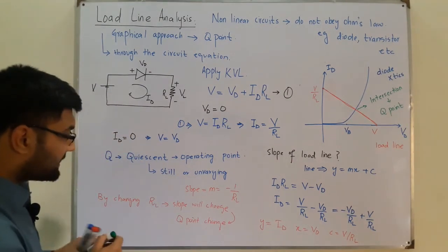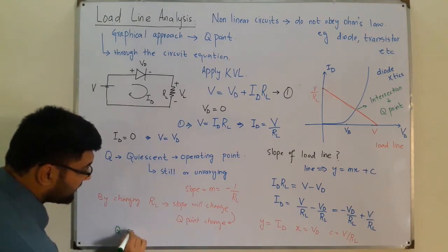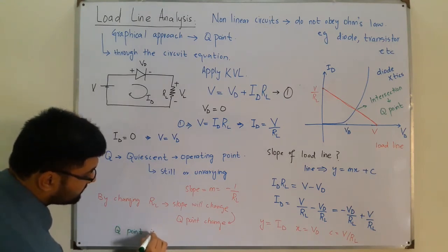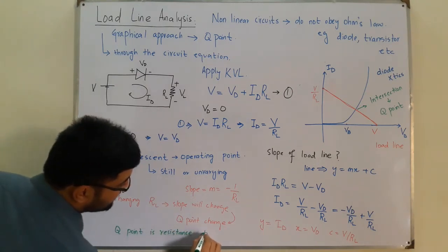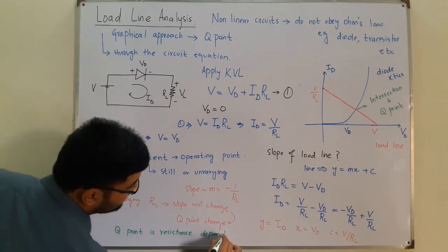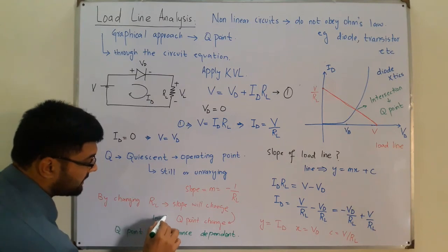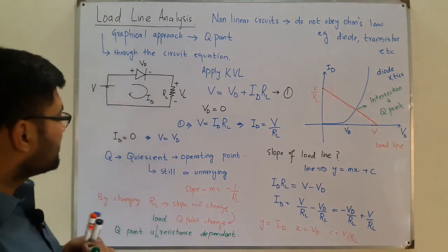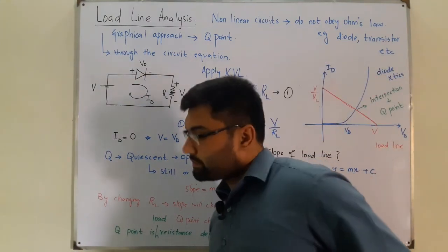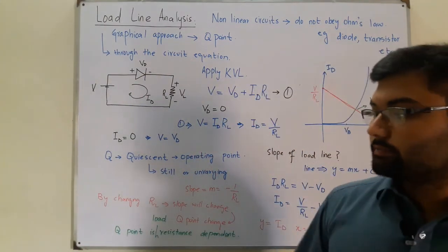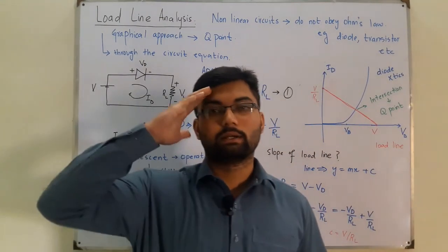In short, the Q point is load-resistance dependent — it changes with a change in RL. There is also an example for this topic, but to keep this video concise, the example will be covered in the next video. Take care, goodbye.